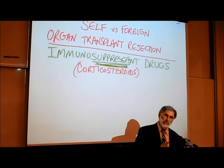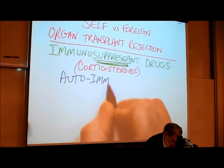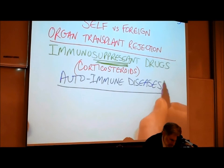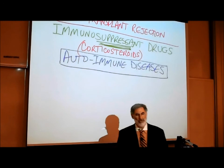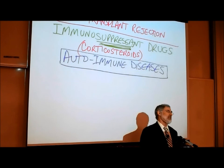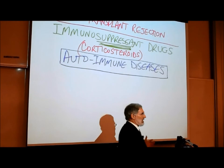Some of you may have heard of a class of diseases called autoimmune diseases. What does "auto" mean? Self. So you're immune to yourself. In an autoimmune disease, the white blood cells actually attack your own cells. That's not supposed to happen, but something has gone terribly wrong and the immune system is attacking your own body cells.